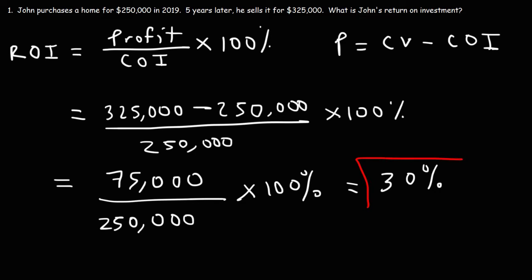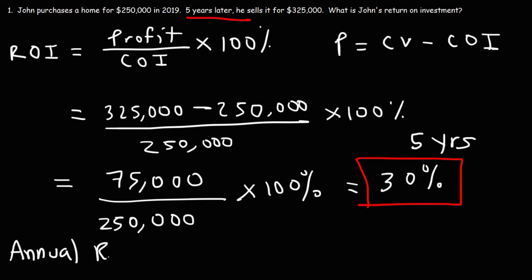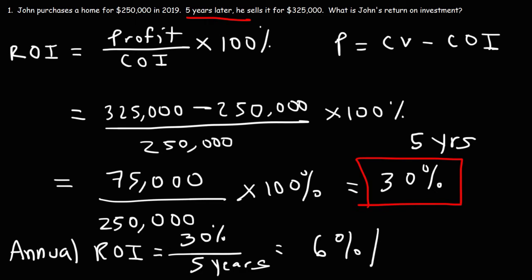So John made a 30% return on his investment in the five-year period. Now with this information, how would you estimate his annual return on investment? Remember, he earned this in five years. So the annual ROI, if we were to average it out, we could take the 30% and divide it over the period of five years. So on average, the value of his home was increasing by 6% per year, on average, without taking into account any effect of compounding.